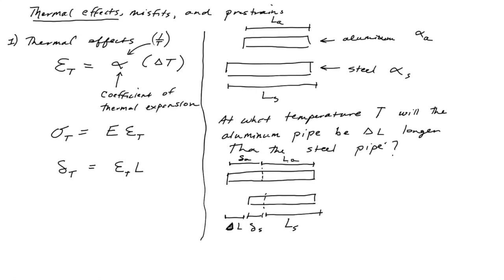So they start out at the lengths LA and LS, and then we heat them up. The aluminum grows and the steel grows, and then we're trying to figure out what happens when the aluminum overtakes the steel. And so what we want to know is when are these going to be the same length? So we have delta A plus LA is equal to delta L plus delta S plus LS.